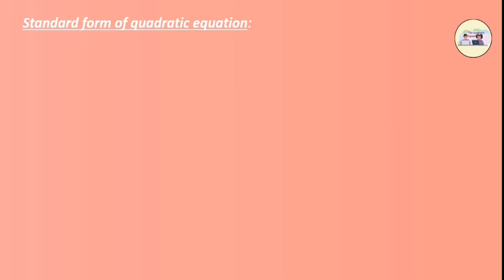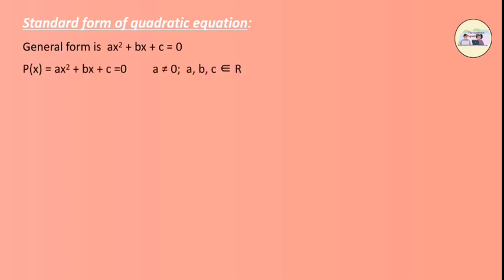Standard form of quadratic equation. The equation involving one variable and having 2 as the maximum index of the variable is called the quadratic equation. The general form is ax squared plus bx plus c equals 0, where a is not equal to 0 and a, b, c belong to R (real numbers). This is known as the standard form of the quadratic equation.